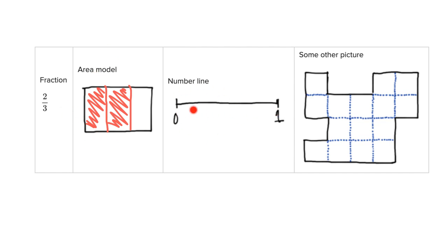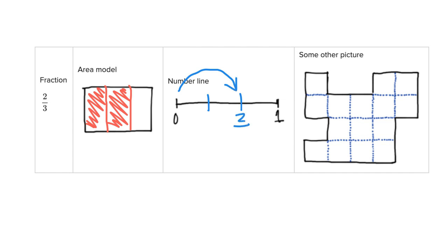If we do the same thing with the number line, that three means we need to cut the number line into three equally sized pieces. Using two lines creates three equal pieces — one, two, three. Then to indicate the two, I use an arch to mark two-thirds right there on the number line.